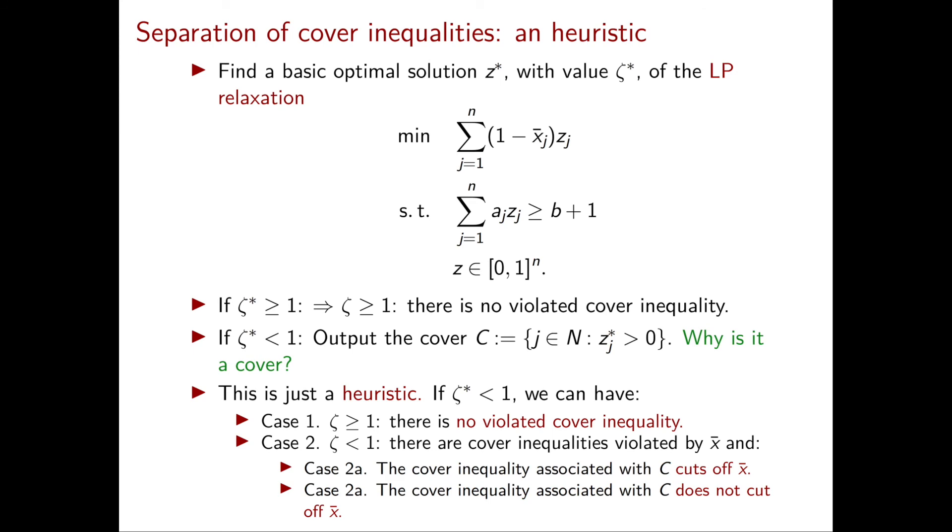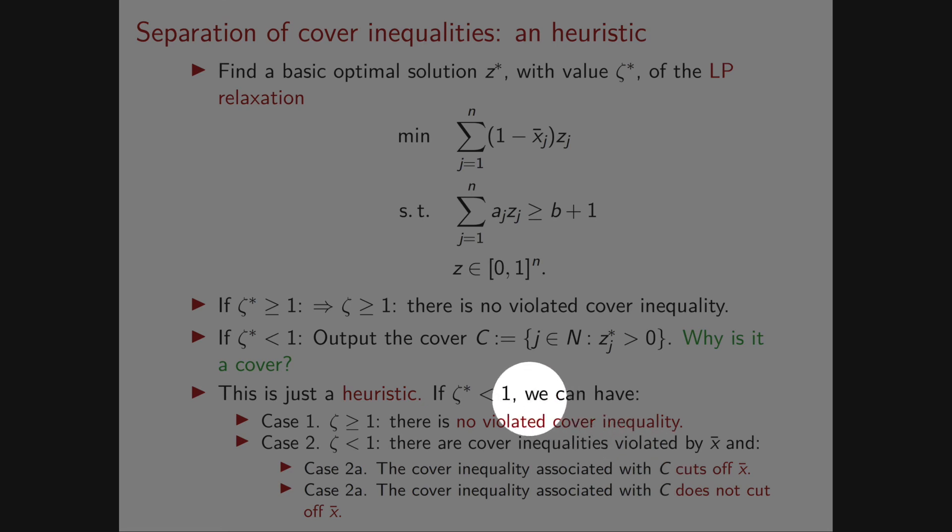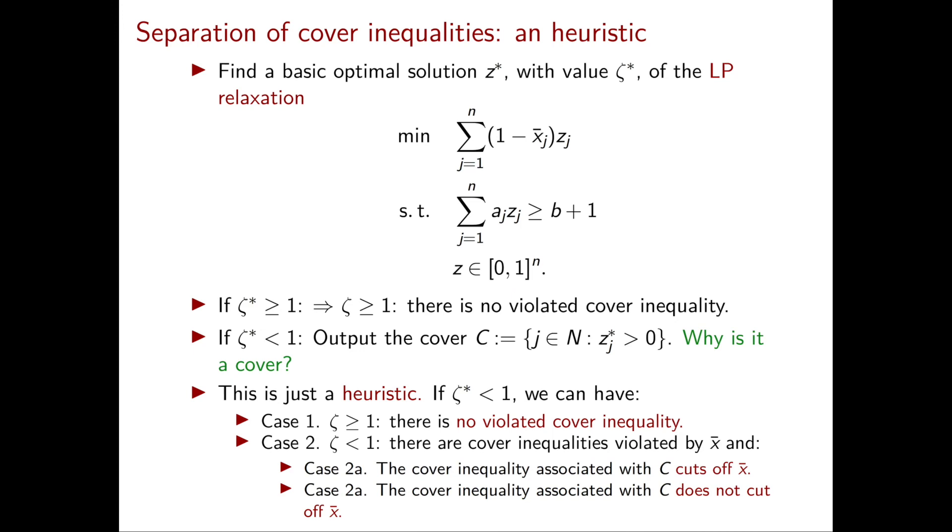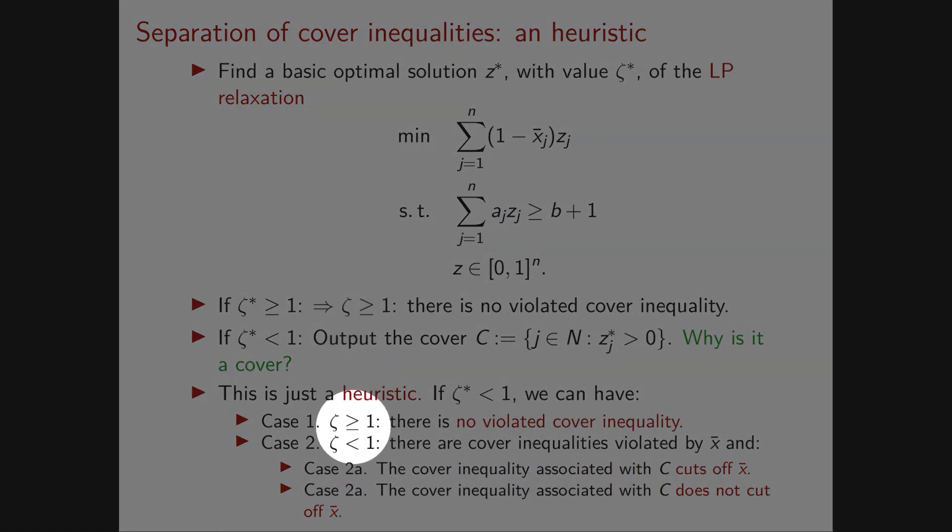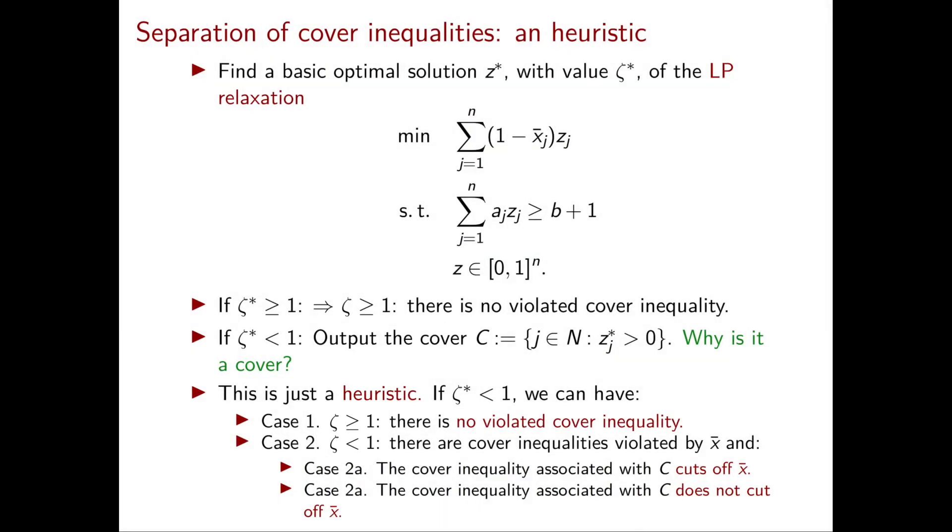I want to stress that using this heuristic, we of course know explicitly the value ζ*, because we obtain it by solving this linear programming problem. But this value ζ, we don't know it. Otherwise, there would be no need to use ζ*.